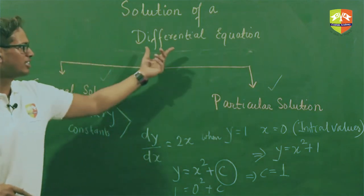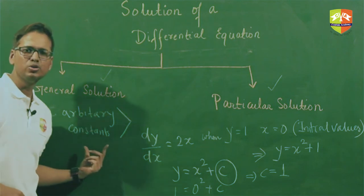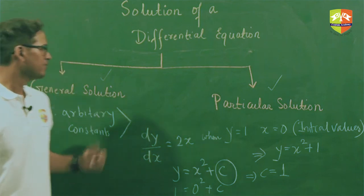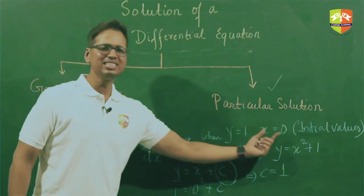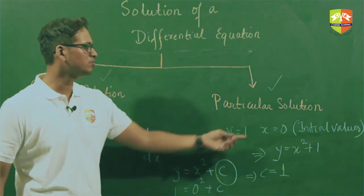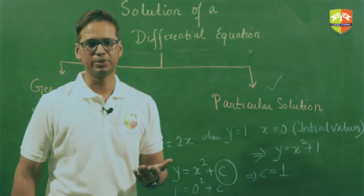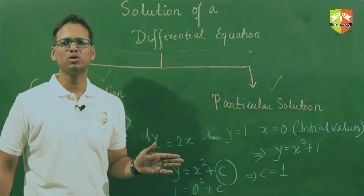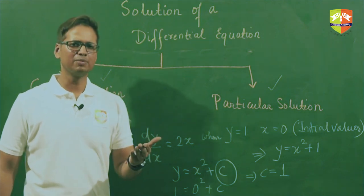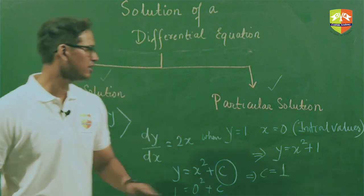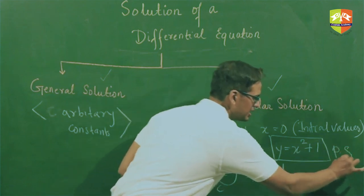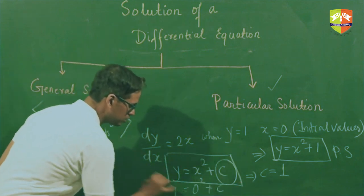To sum up: a differential equation will have a general solution if we write the solution involving arbitrary constants whose values are not known. If we write the solution by assigning a value to the arbitrary constant — which we find from the initial values given in the question — and the solution involves no unknown arbitrary constants, then that solution is called the particular solution. And the solution with unknown arbitrary constants is called the general solution.